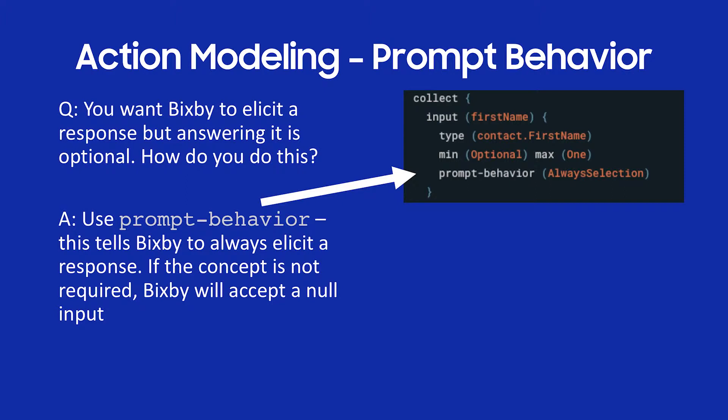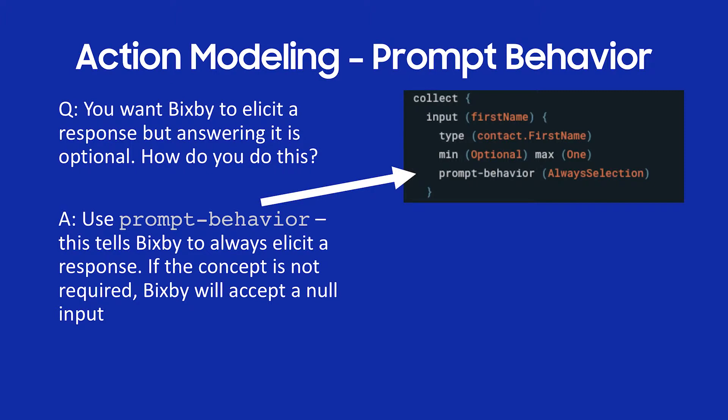What happens if I've set my cardinality as optional but I'd really like Bixby to elicit that input from the user? In this example, I'm inputting first name with min optional and max one. If I ran it that way, Bixby would never elicit that input. But using prompt behavior 'always selection,' that tells Bixby to always ask the user for the first name, even though cardinality is min optional. The user can enter a first name or nothing, and that's totally valid.